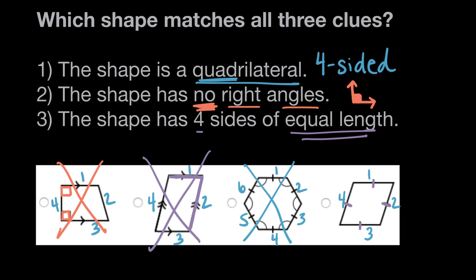Anytime you have these marks, it's saying that any side that has the same amount of marks is the same length. All four of these sides have exactly one tick mark, so they are all equal in length.